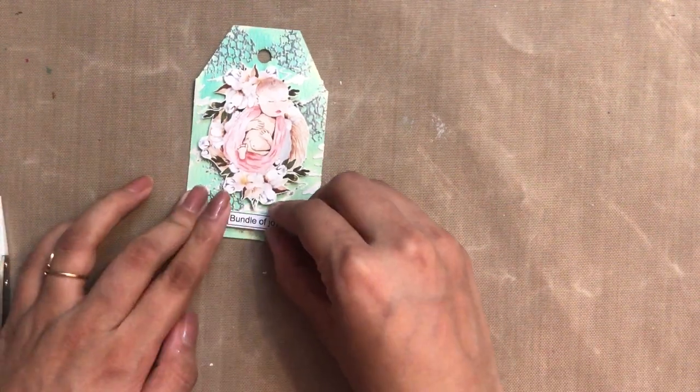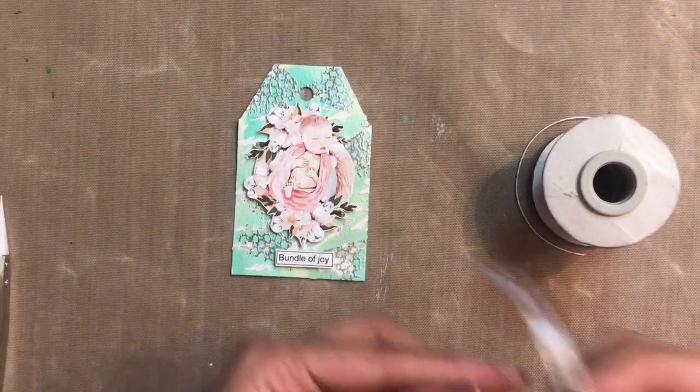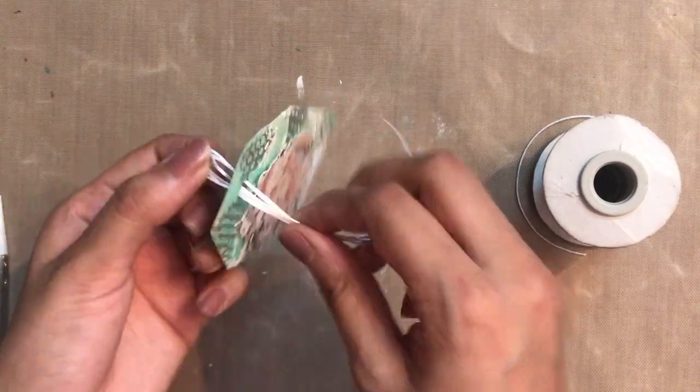To complete the look of my tag, here I have the off-white satin ribbon twine from Dress My Craft, which I'm going to add on the top. Our tag is ready. Now it's time to embellish the tag.